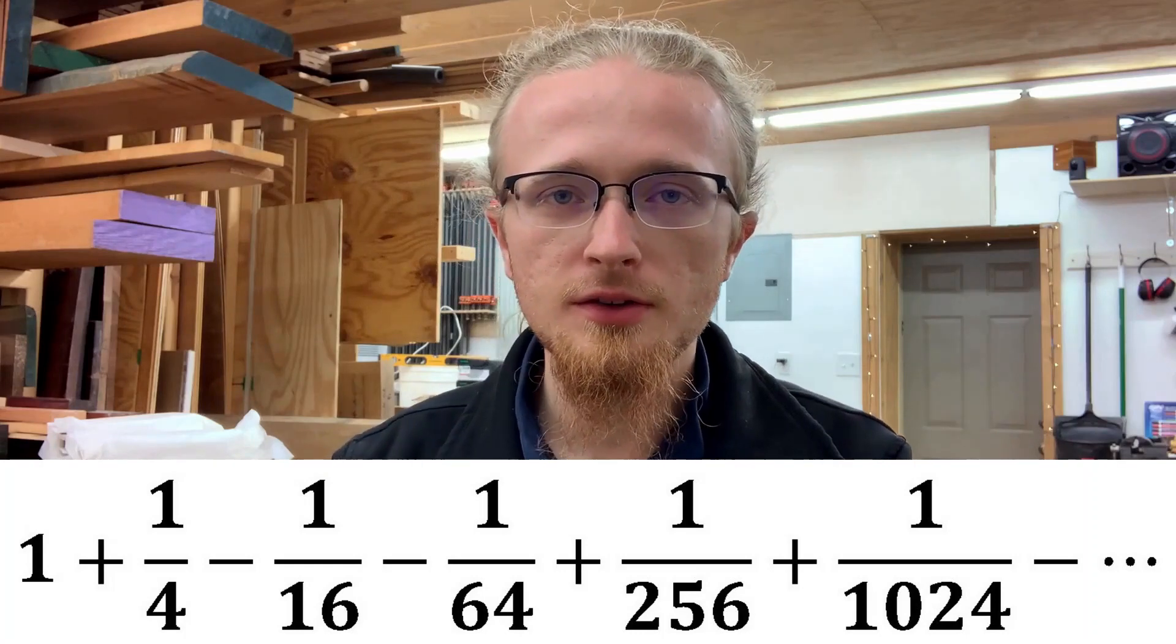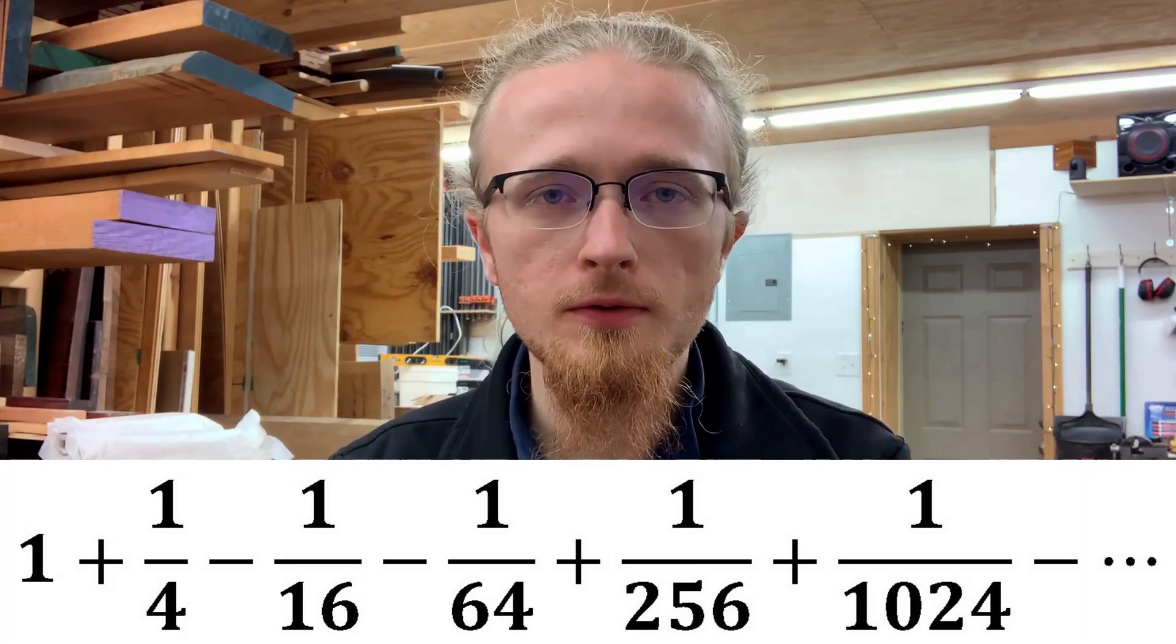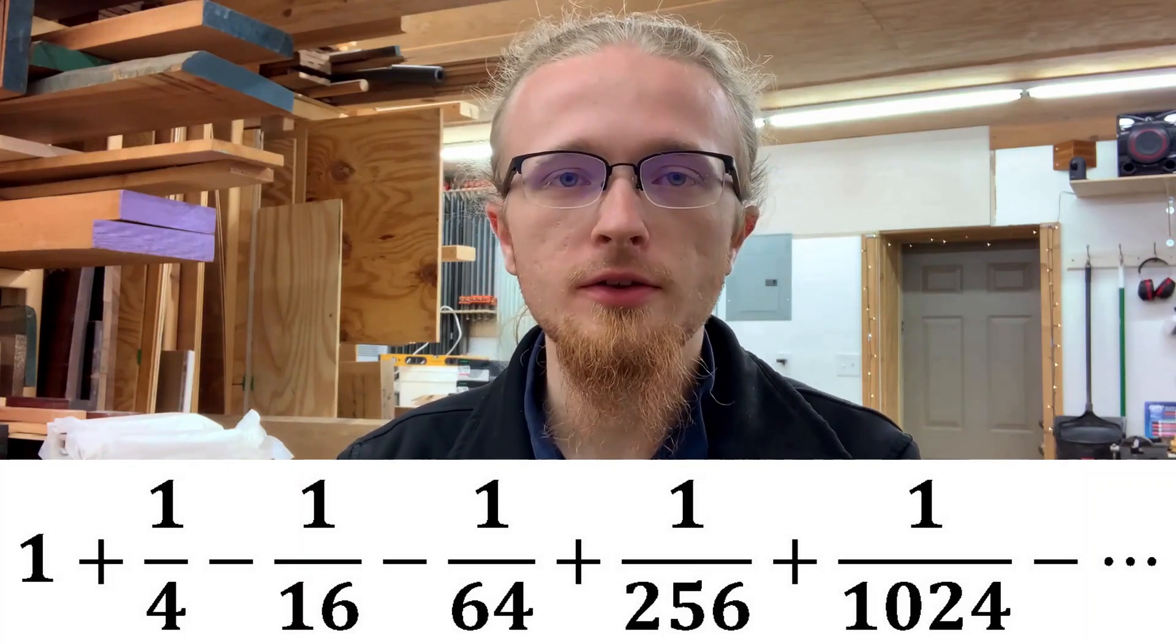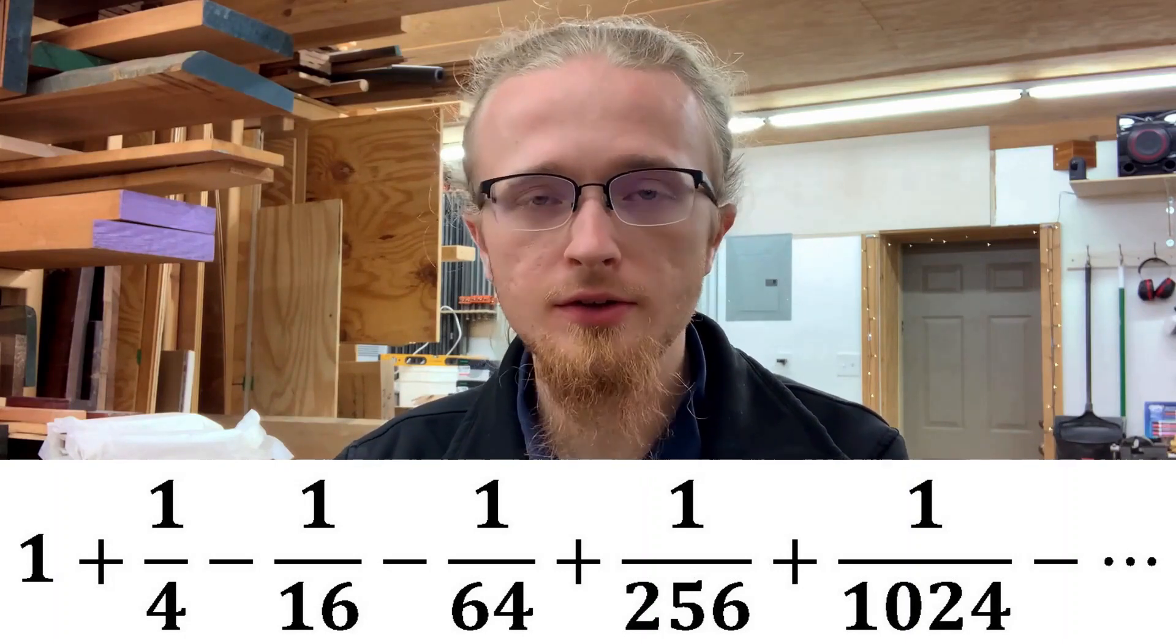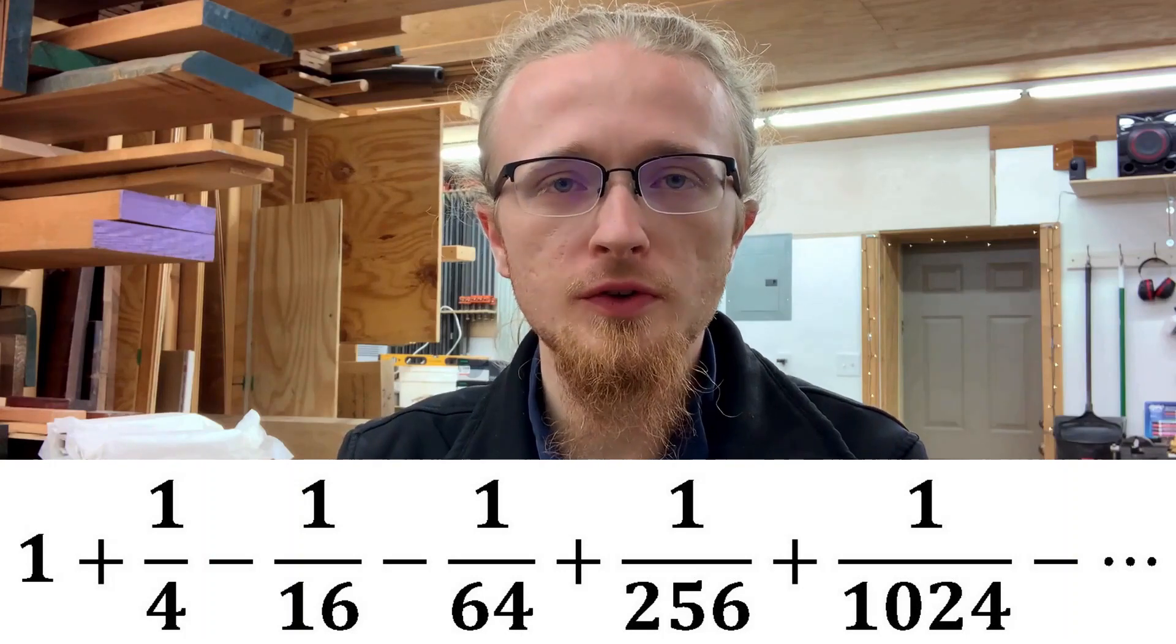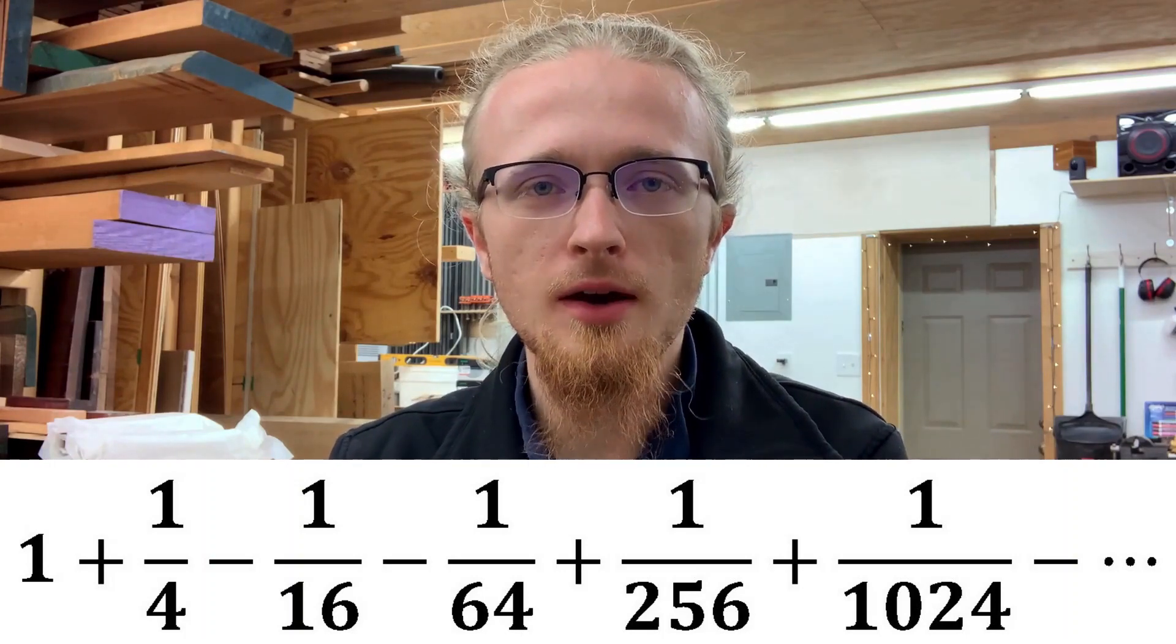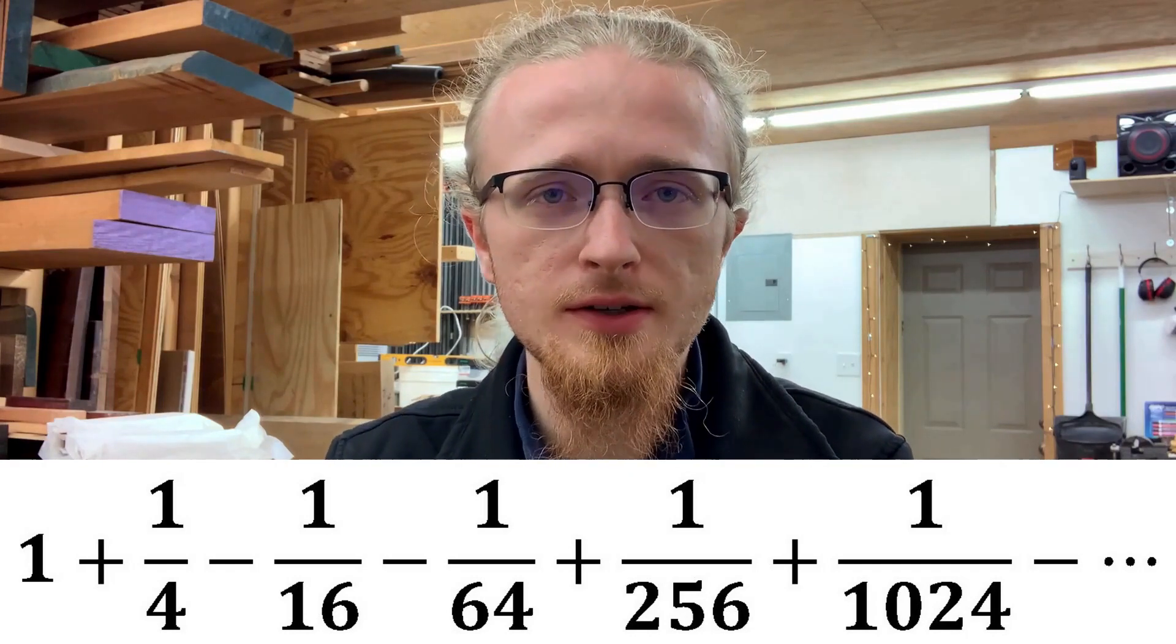Looking at this series, we can see that it has really two obvious features. First, all of the denominators are some kind of power of 2. And second, while the sign does change on the terms as you go down the series, it doesn't quite alternate. Specifically, it alternates in 2s instead of every other term, and that's actually kind of peculiar. It's not really clear how to handle an infinite series with the signs changing like that.